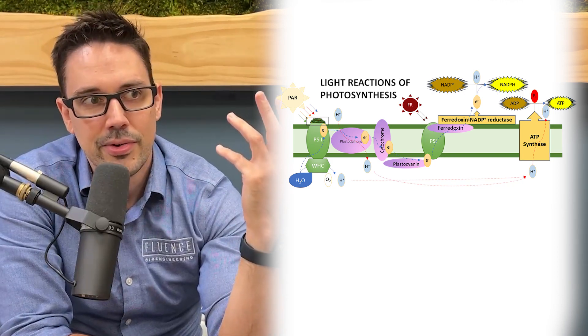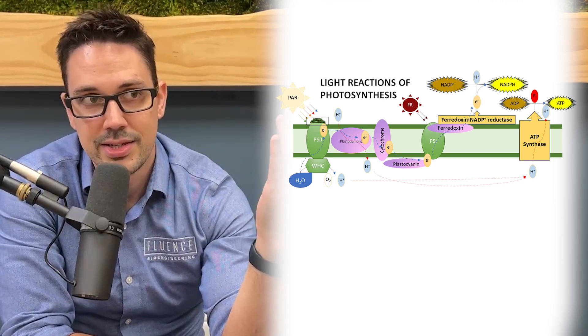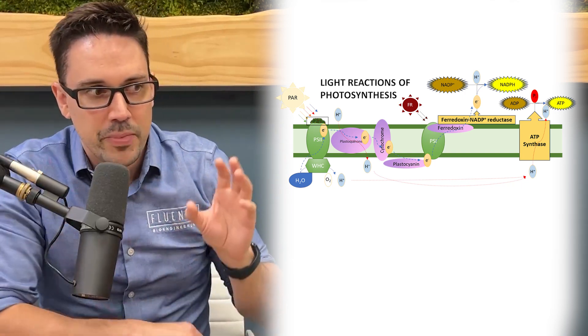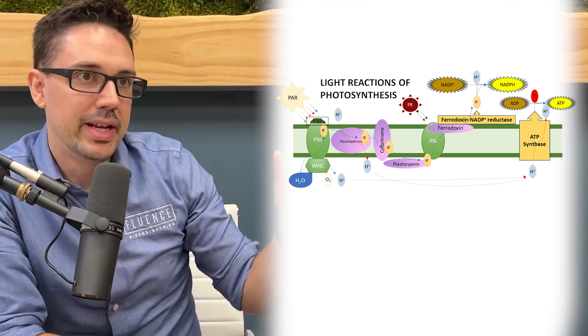So if you are driving photosynthesis fairly hard and you're harvesting a lot of electrons from water molecules, and that particular step begins to be a bottleneck, that's a situation where using far-red to move that step along is going to give you a net greater photosynthetic rate than just pushing more light on the front end. That's what the Emerson enhancement effect is.